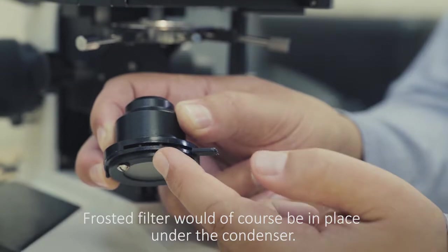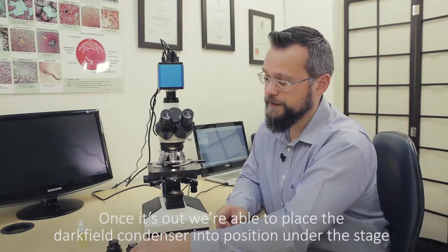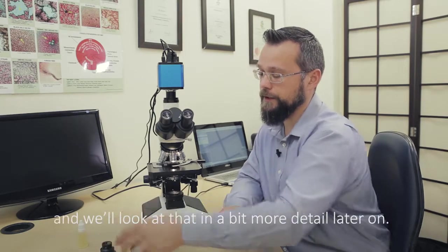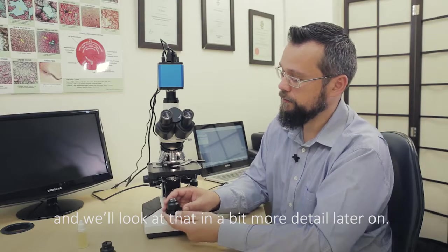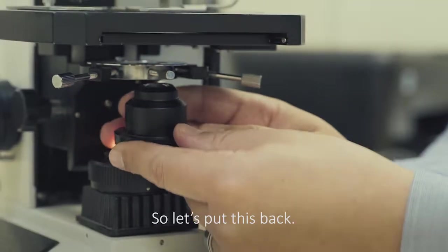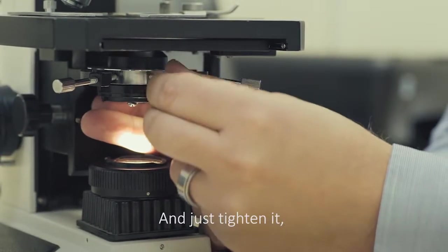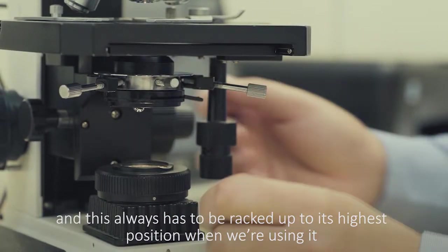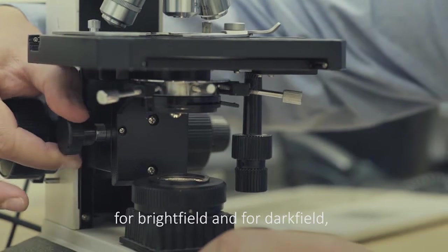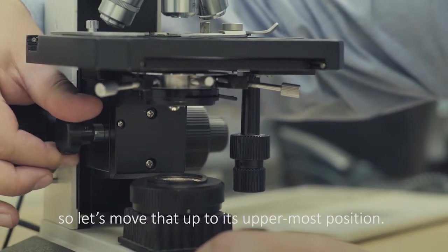Once it's out, we're able to place the darkfield condenser into position under the stage. We'll look at that in a bit more detail later on. Let's put this back and just tighten it. This always has to be racked up to its highest position when we're using it for brightfield and for darkfield. Let's move that up to its uppermost position. You'll also notice that it stops on its own.